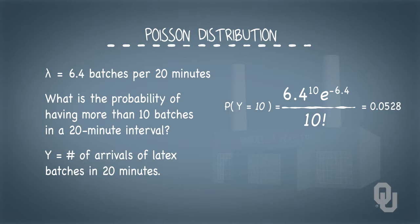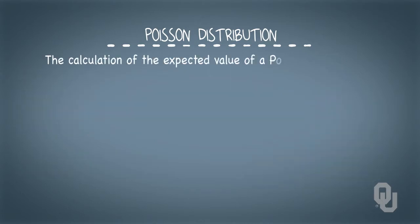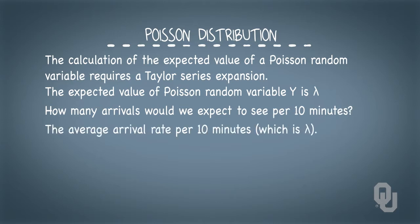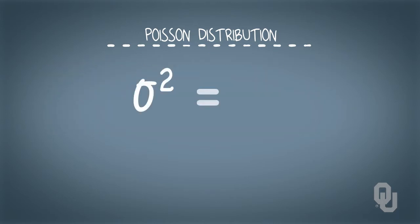The calculation of the expected value of a Poisson random variable requires a Taylor series expansion. As it turns out, the expected value of Poisson random variable y is simply lambda. And that shouldn't be too surprising. How many arrivals would we expect to see per 10 minutes? The average arrival rate per 10 minutes. And the variance is lambda squared, therefore the standard deviation is lambda.